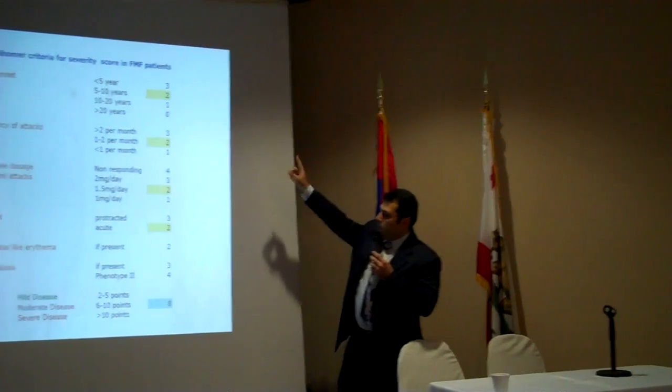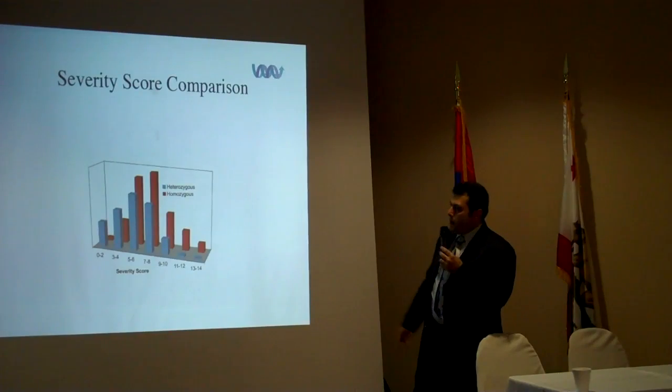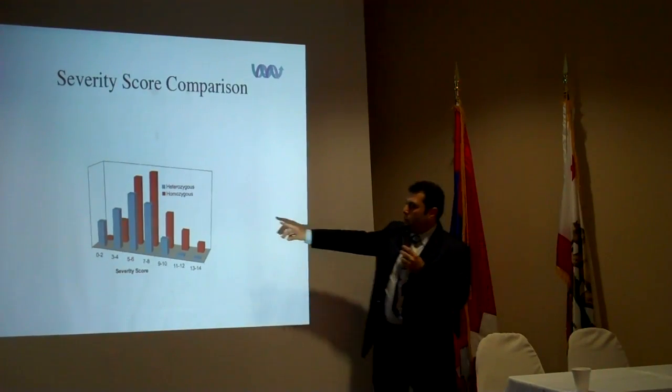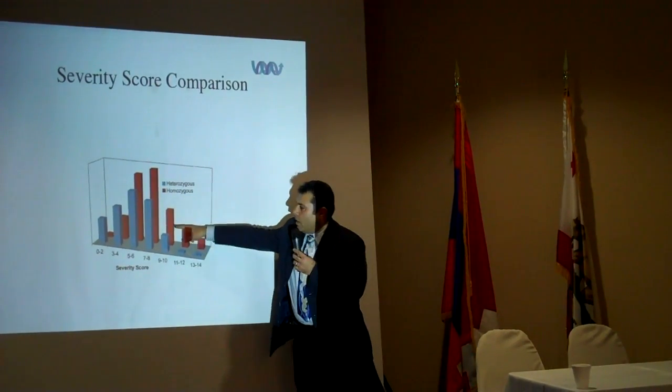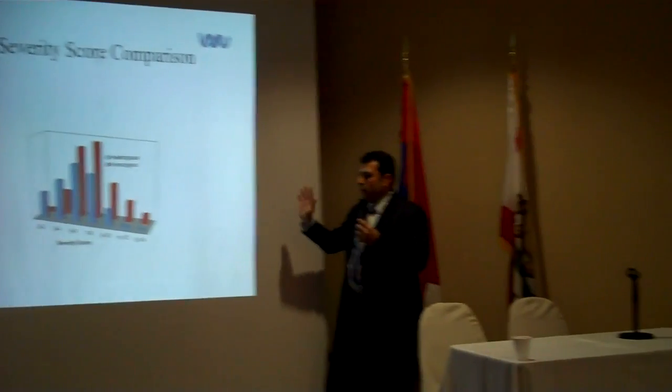Here is where we calculated the severity scores. The heterozygous — the blue ones — you can see they are on a score of seven or eight and lower, so they are mild to moderate. Homozygous, on the other hand, start low on the mild to moderate range and become very severe.